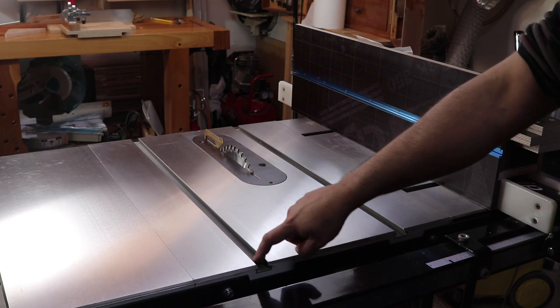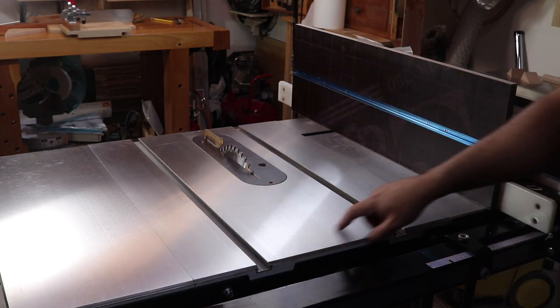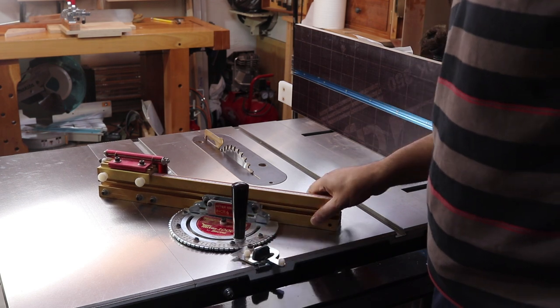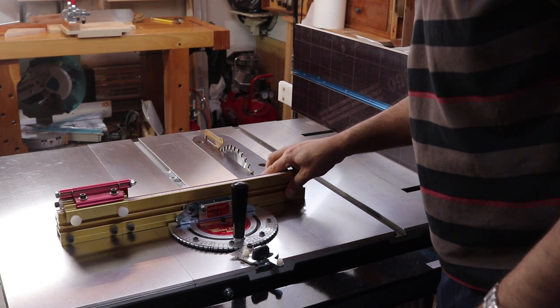These T-tracks are essential on any table saw for mounting the miter gauge that is used to make cross cuts and miter cuts.